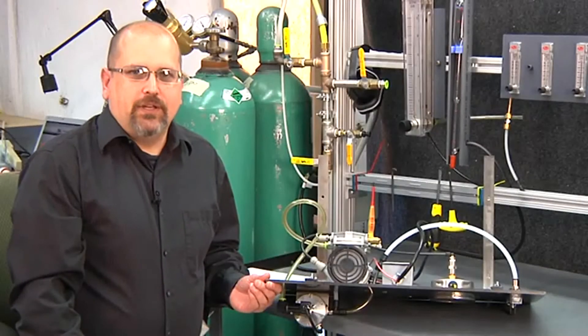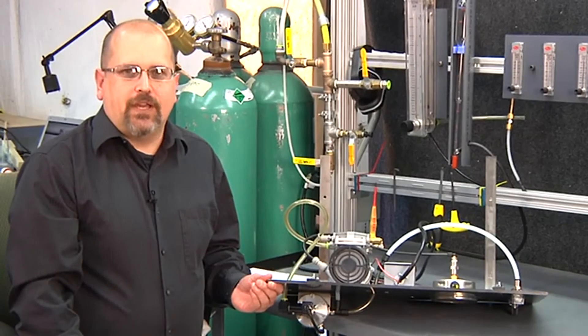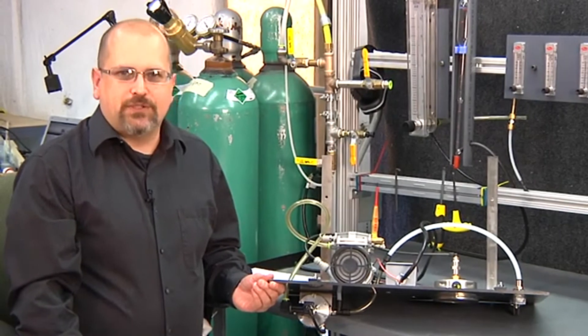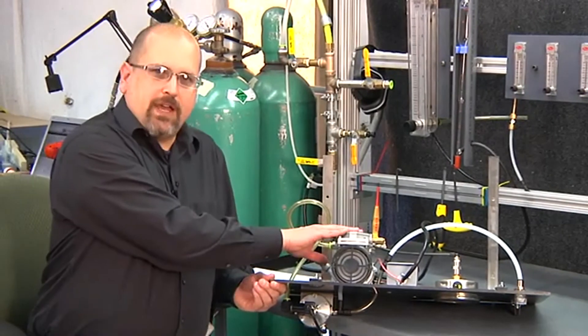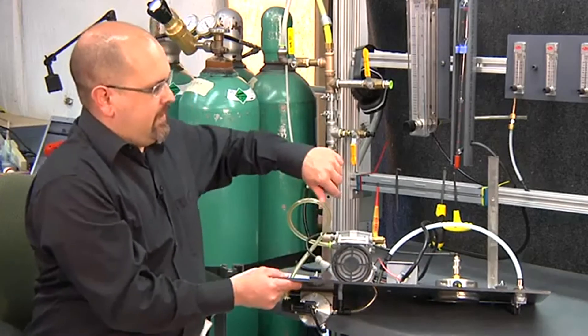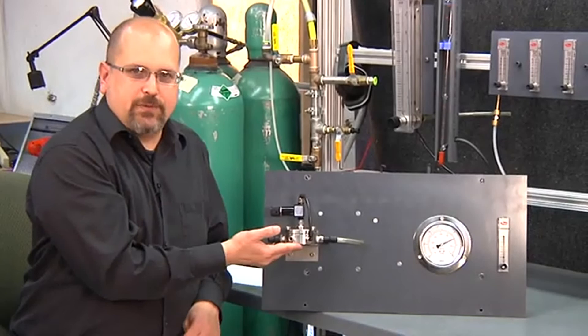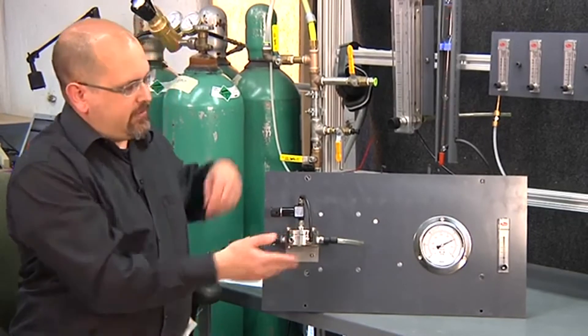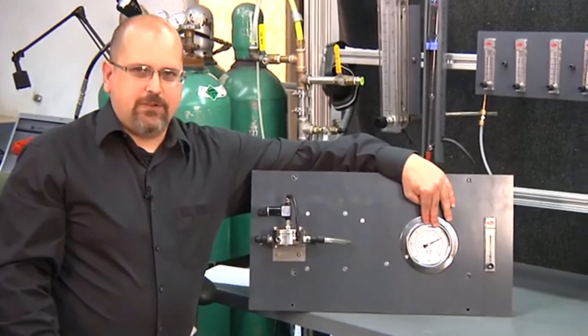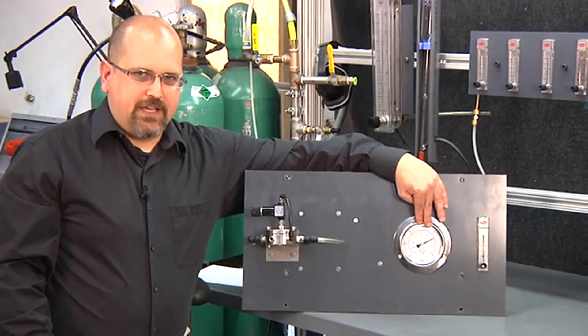Now we're out in the laboratory to see a demonstration of direct vacuum regulation. As was shown on the blackboard, we have a vacuum pump. The vacuum pump is feeding an Equilibar vacuum pressure regulator and the Equilibar is controlling system vacuum as shown on this gauge.